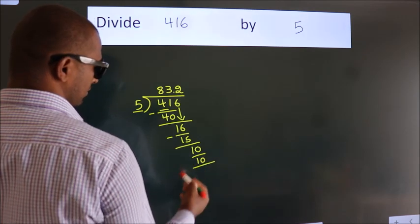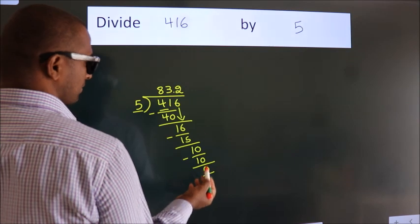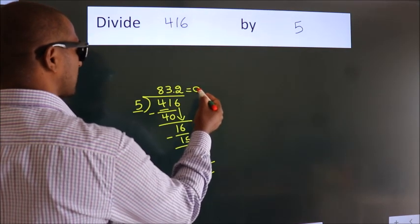Now we subtract. We get 0. We got remainder 0, so this is our quotient.